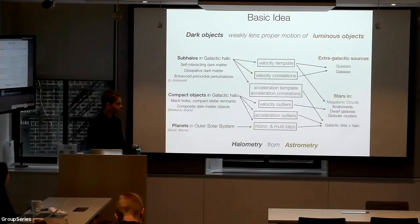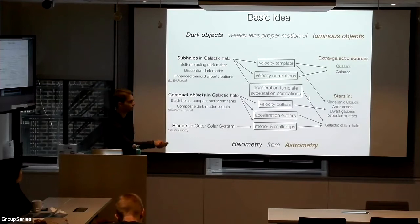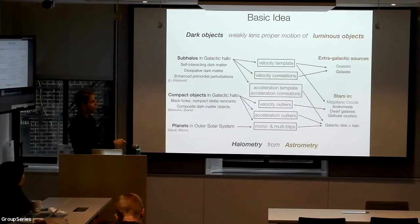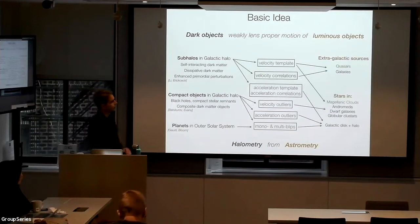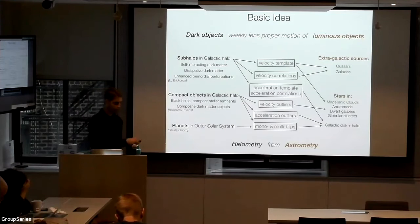The basic idea is that dark objects can weakly lens the proper motion and induce proper motion corrections on luminous objects. You can pick any favorite dark object and any favorite luminous source, and use the observables outlined. Because we only have access to proper motions in the Gaia dataset, I'll talk about velocity-based observables for subhalos in the Milky Way — the velocity template analysis on the Magellanic clouds and the proper motion power spectrum in the Gaia-quasar data sample.